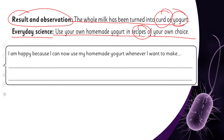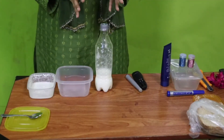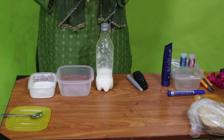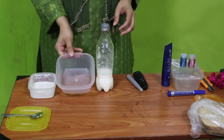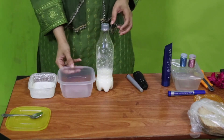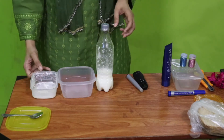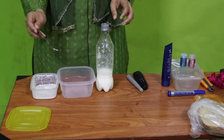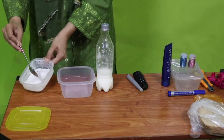Now we will perform the experiment here. First of all, let's look at the materials required. As you all know, milk is required, and the milk should be lukewarm — neither too hot nor too cold. I have also taken an empty container and a few tablespoons of curd. I do not have a stirrer right now, so I am using this spoon.